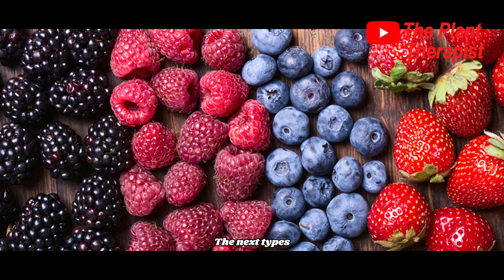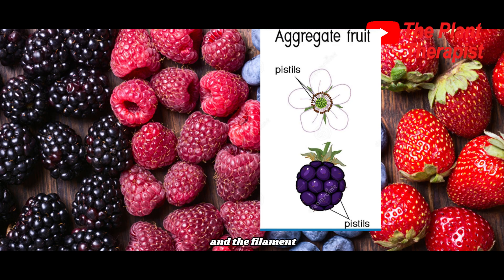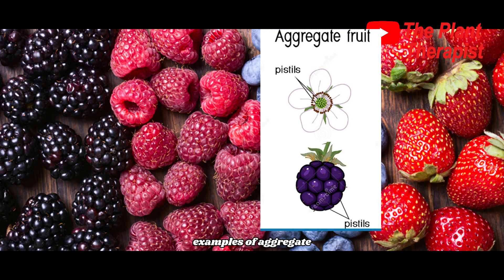The next type of fruits are aggregate fruits. An aggregate fruit is derived from a single flower with several to many pistils. The individual pistils develop into tiny drupes or other fruitlets, but they mature as a cluster unit on a single receptacle. Examples of aggregate fruits are raspberries, blackberries, and strawberries.